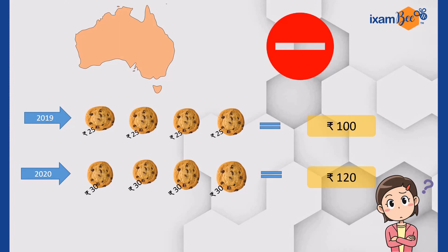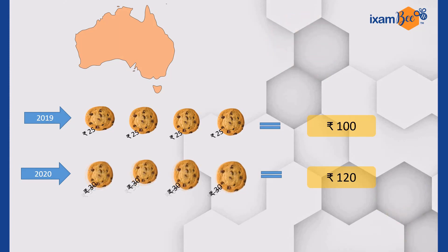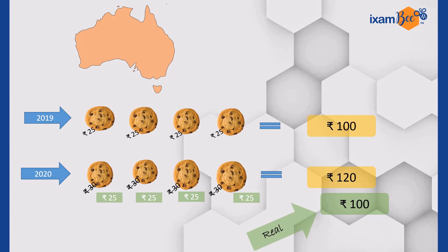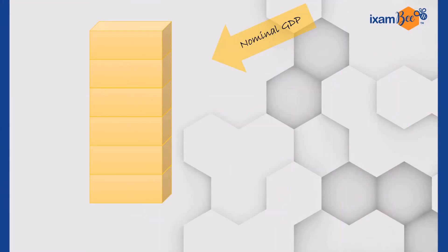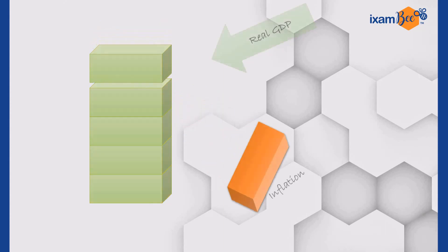As the name suggests, GDP — gross domestic product — is more about production and less about money. Irrespective of the prices, the production of Australia remains the same during these two years: four cookies. When we calculate Australia's GDP on 2019 price levels, we get 25 × 4 = 100 rupees — this is the real GDP. The GDP at current prices, that is 120 rupees, is what we call nominal GDP. To be precise, if six blocks represent nominal GDP, once we remove the price rise or inflation block, what we get is real GDP.